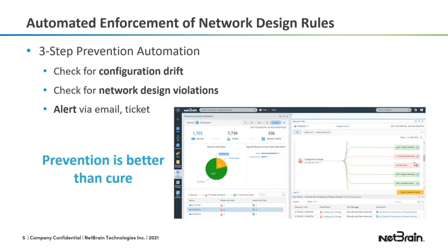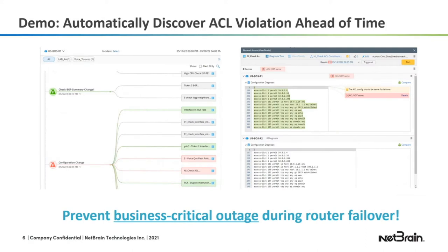The premise here is that prevention is much better than cure. In this demo I'm going to show how we can discover an ACL violation ahead of time. We have a check for configuration change running regularly. If an alert is detected, we kick off subsequent checks, one of which is checking for ACL consistency. As you can see, R1 and R2 have their access lists but they are not the same — during failover from R1 to R2, having different access lists could potentially black-hole traffic and cause a business-critical outage for an application, or voice or video.